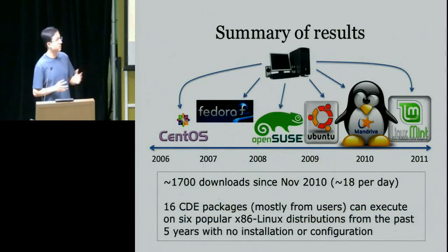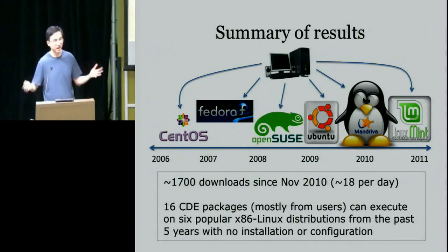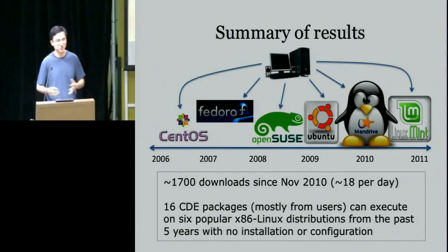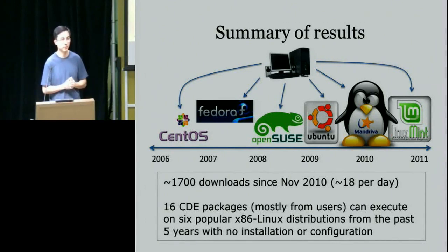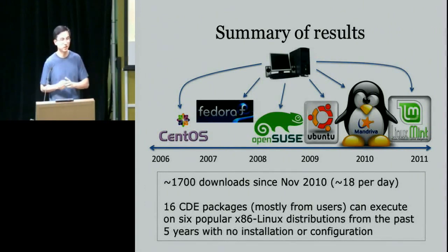The CDE binary has been downloaded around 1,700 times since it was released in November. This is tiny for things done at production scale at Google, but for a research project with one developer, it's a decent number — good enough to have gotten user feedback, bug reports, feature requests, and real-world use cases, which has been really helpful for the research. People have found it useful in all sorts of domains.